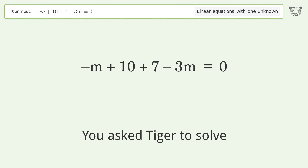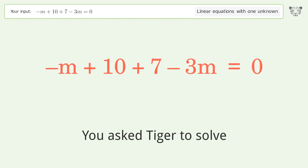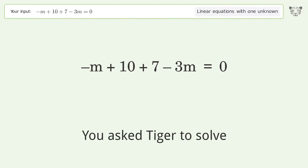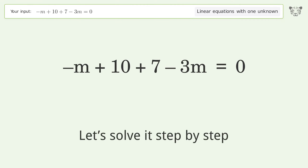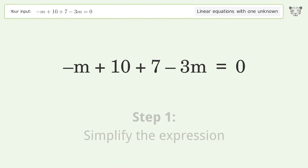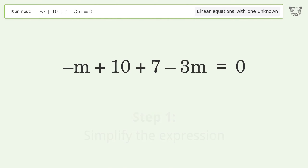Tiger is asked to solve a linear equation with one unknown. The final result is m equals 17 over 4. Let's solve it step by step: simplify the expression and group like terms.